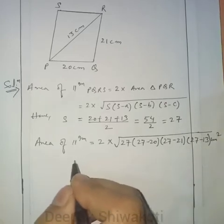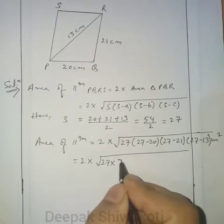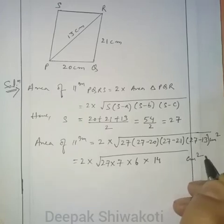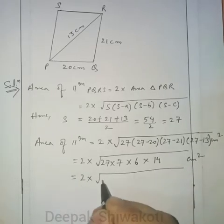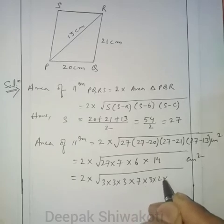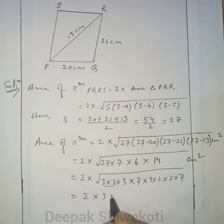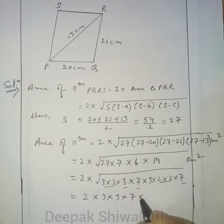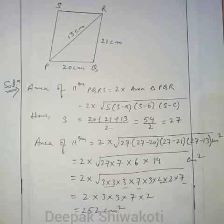Simplifying: 27 = 3×3×3, 7 is 7, 6 = 2×3, 14 = 2×7. Pairing factors under the square root: we get pairs of 3×3, 7×7, and 2×2, leaving one 3 unpaired — but the product works out. Multiplying all out, we get 252 cm² as the area of parallelogram PQRS.